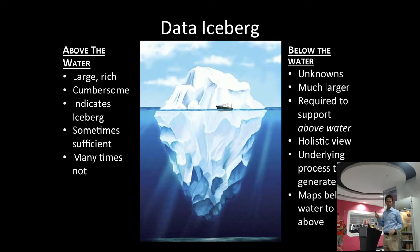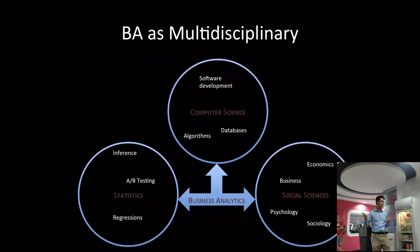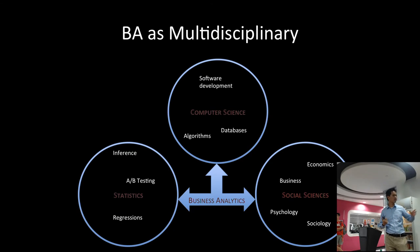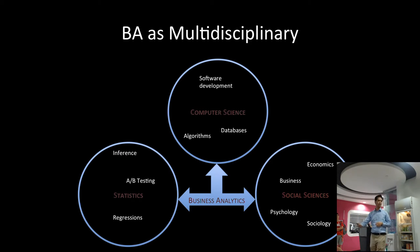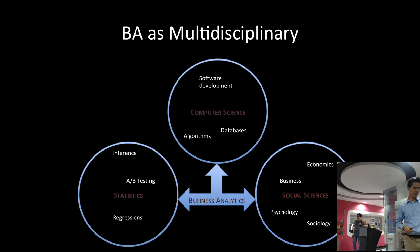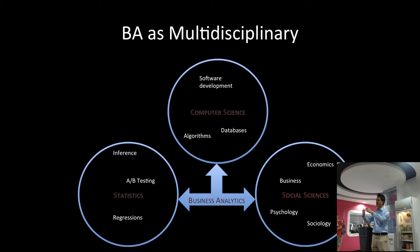For business analytics at NUS, we view it as really pulling from three different pillars. Of course, traditionally it's computer science — software development, algorithms, databases, data warehouses and so forth. But we also need to pull from statistics — things like statistical inference, can you believe the data, how reliable is the data, p-values, regressions, and a lot of interesting tools. But what tends to be missing — what I observe a lot of times in organizations — is the social science side.